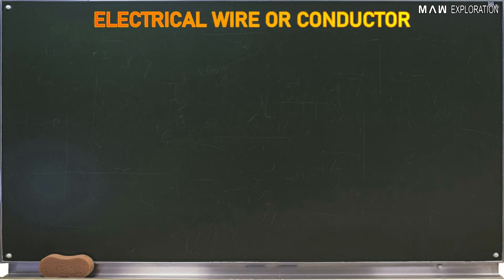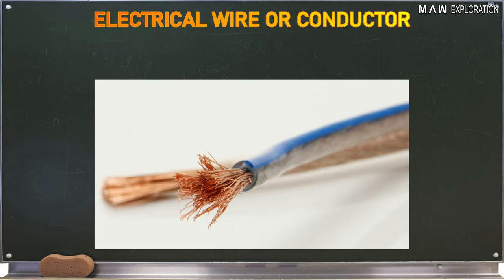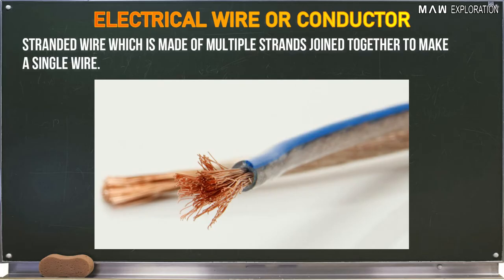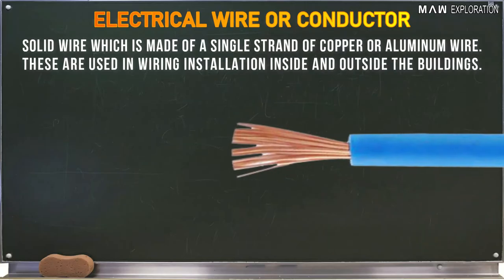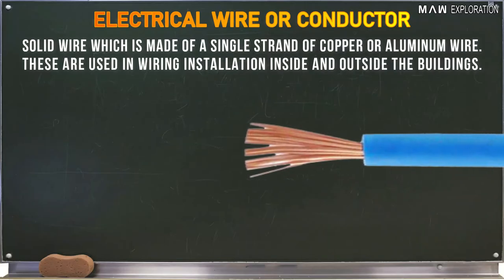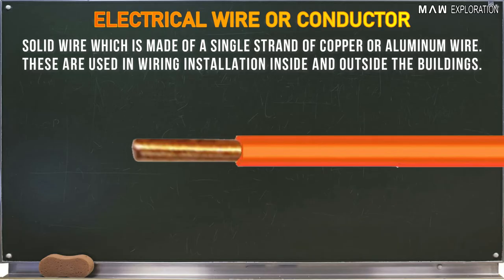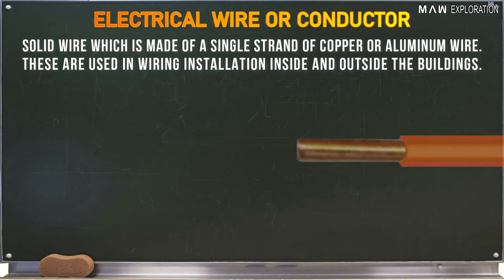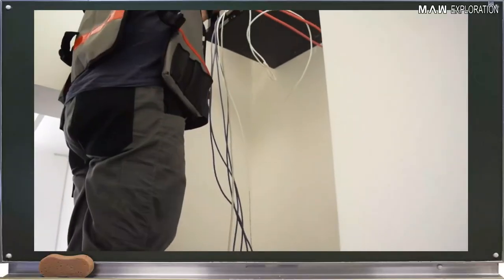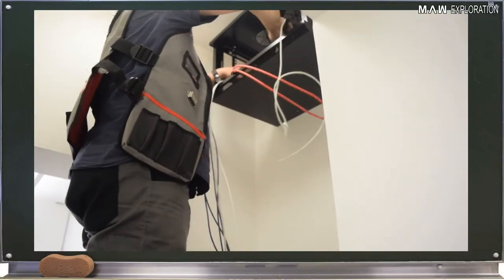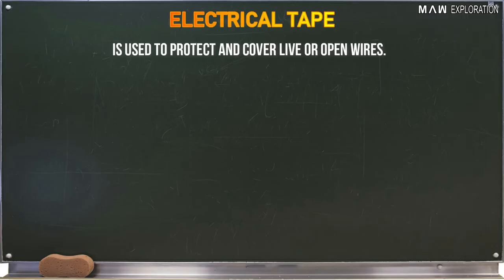Electrical wire or conductor is an electrical material that could be a stranded wire, which is made of multiple strands joined together to make a single wire, or a solid wire, which is made of a single strand of copper or aluminum wire. These are used in wiring installation inside and outside buildings.